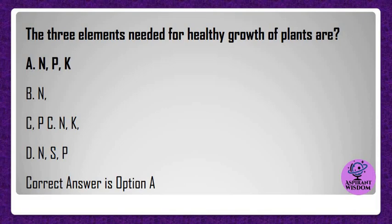The three elements needed for healthy growth of plants are? A) N, P, K, B) N, C, P, C) N, K, D) N, S, P. Correct answer is option A.